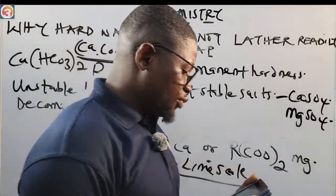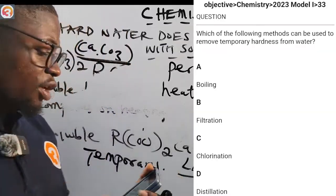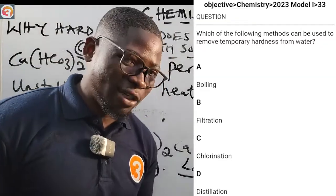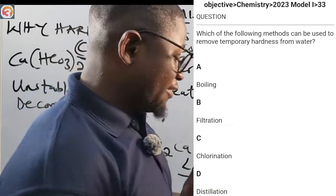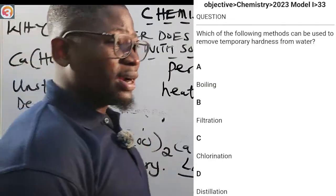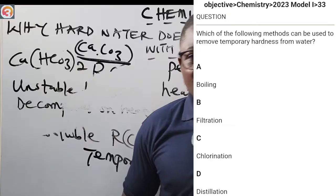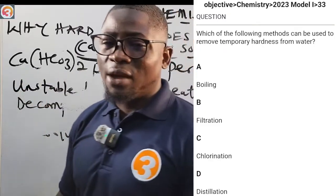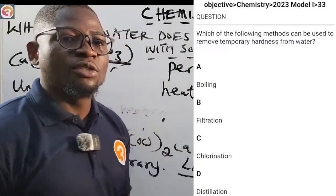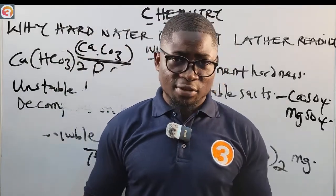Another question from 2023, number 33: which of the following methods can be used to remove temporary hardness from water? Options are: A — boiling, B — filtration, C — chlorination, D — distillation. The correct answer is A: boiling. Temporary hardness is caused by an unstable compound — Ca(HCO₃)₂ — which decomposes on heating. Permanent hardness cannot be removed by boiling because it is caused by heat-stable salts like CaSO₄ or MgSO₄. Thank you for watching; see you in the next episode.